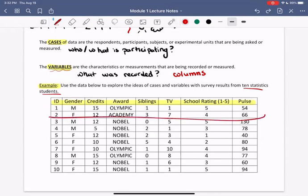Each column is a different variable, ID, gender, credits, et cetera. And then we see each row. Well, there's information or variables collected about one person, right? ID number two. They are female. They have 12 credits. They are awarded the Academy Award. They have three siblings, et cetera. And so a case in a data table is often represented in a row.